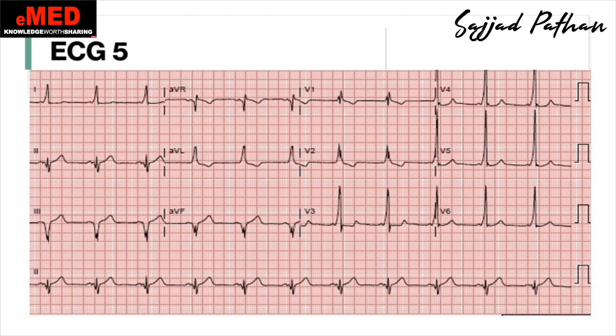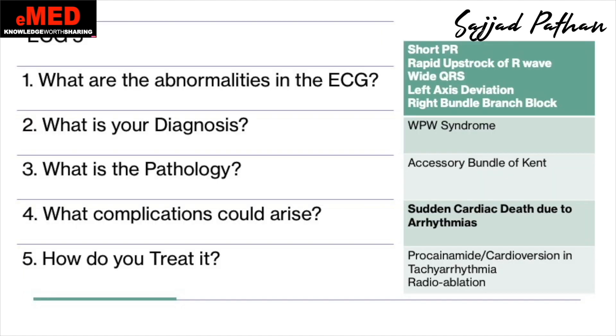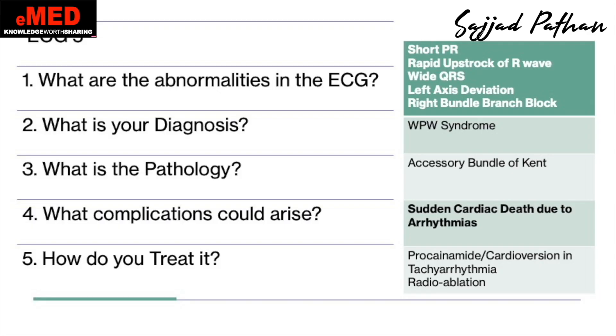What is the abnormality in ECG five? If you look closely, you will see a very short PR interval, rapid upstroke of R waves, wide QRS, associated left axis deviation, and right bundle branch block is present. The rapid upstroke of the R wave represents delta waves. The diagnosis is WPW syndrome. The pathology is an accessory bundle of Kent conducting impulses from the atrium to the ventricles.